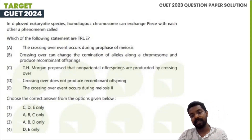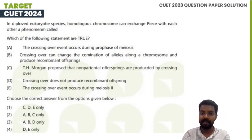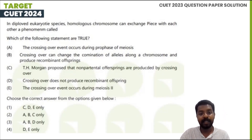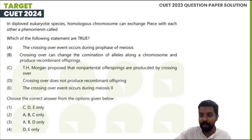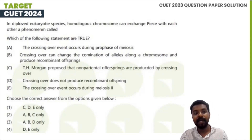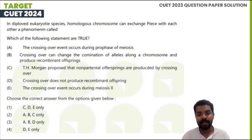In the prophase, we have seen the crossing over. Option A, Option B — crossing over can change the combination of alleles along a chromosome and produce recombinant offspring. This crossover can produce a combination of alleles. Second statement, third one: